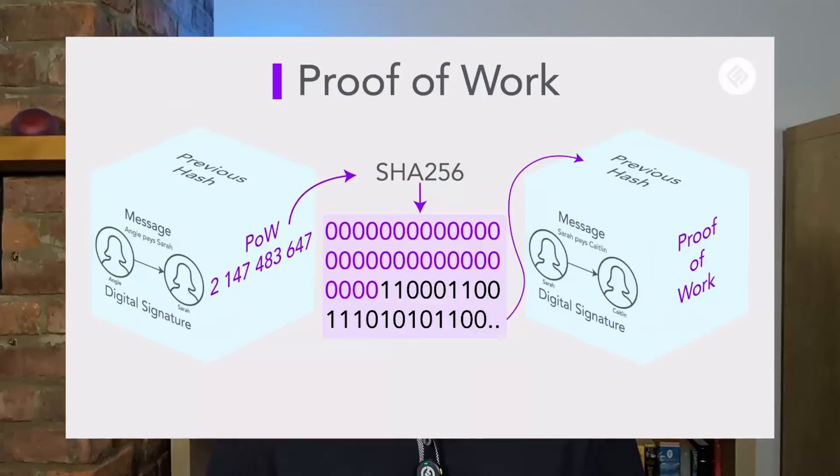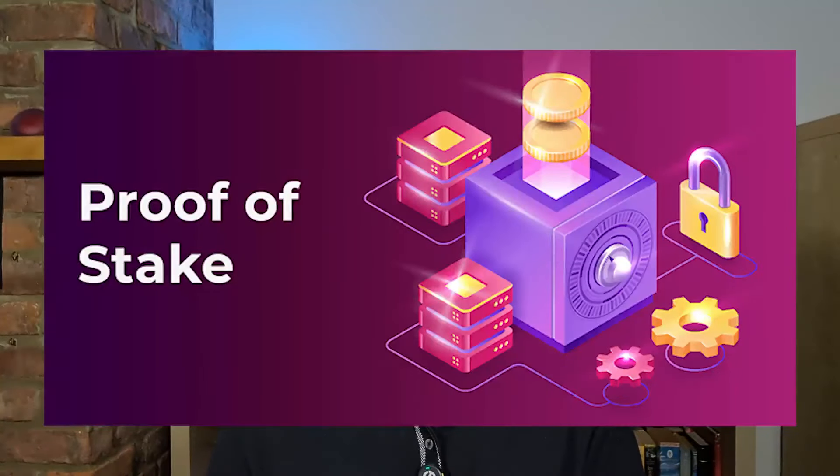Bitcoin, for example, uses a proof of work consensus mechanism, which ensures a high level of security and decentralization, but isn't the fastest or most scalable. Ethereum is now a proof of stake model with Ethereum 2.0 to address cost and scalability issues. Some advantages of layer ones are the high level of security and decentralization, although this will depend on the consensus mechanism the cryptocurrency project uses. Layer ones also provide a fundamental infrastructure for the other layers.